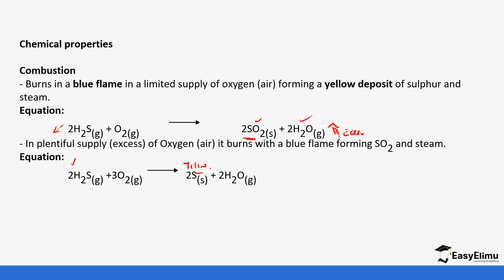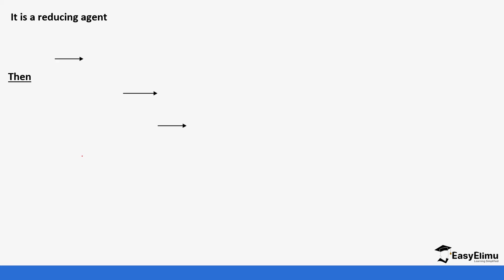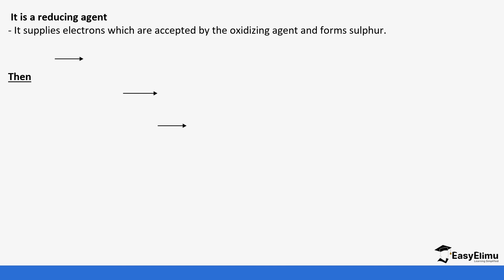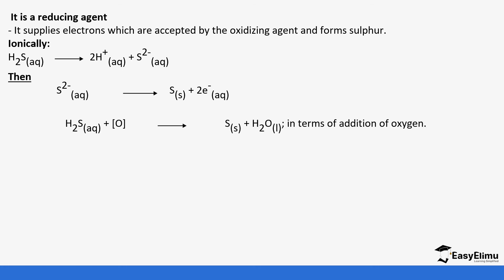Hydrogen sulfide also acts as a reducing agent. It supplies electrons which are accepted by oxidizing agents, forming sulfide in return. Hydrogen sulfide dissociates to form two hydrogen ions and sulfide ions, and then the sulfide ions lose two electrons to form sulfur solid. These two electrons are the ones supplied to the oxidizing agent. When hydrogen sulfide reacts with an oxidizing agent, sulfur deposits will always be seen, along with water.